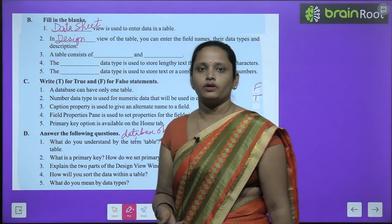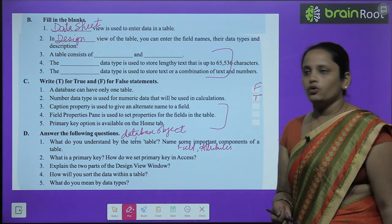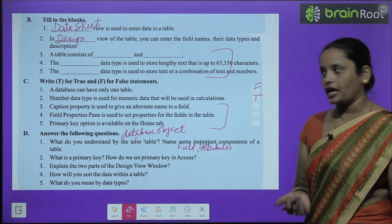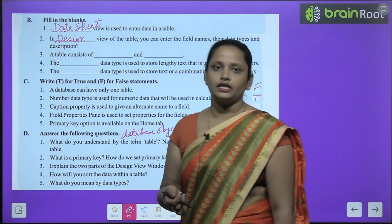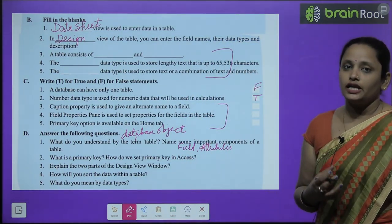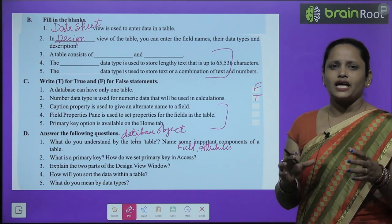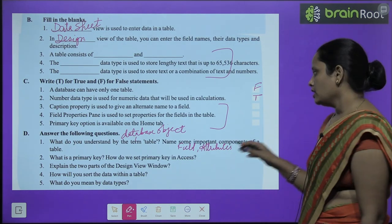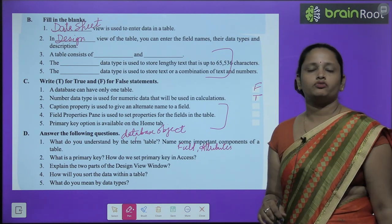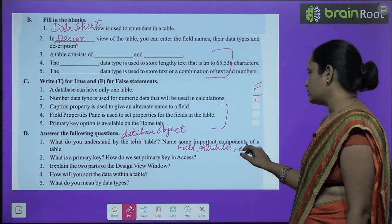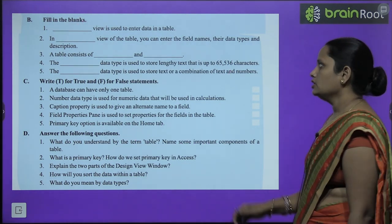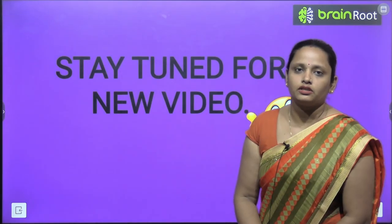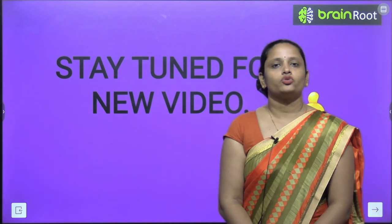Now Part D — Answer the following questions. First: What do you understand by the term table? A table is a database object that is used to organize data in a precise, organized manner. Some important components of the table are fields, records, and attributes. Do the rest of the questions yourself after reading the chapter. With this, children, we have completed the chapter. I hope it's clear to you. I will be meeting you soon with a new video — till then stay tuned, and thanks for watching.